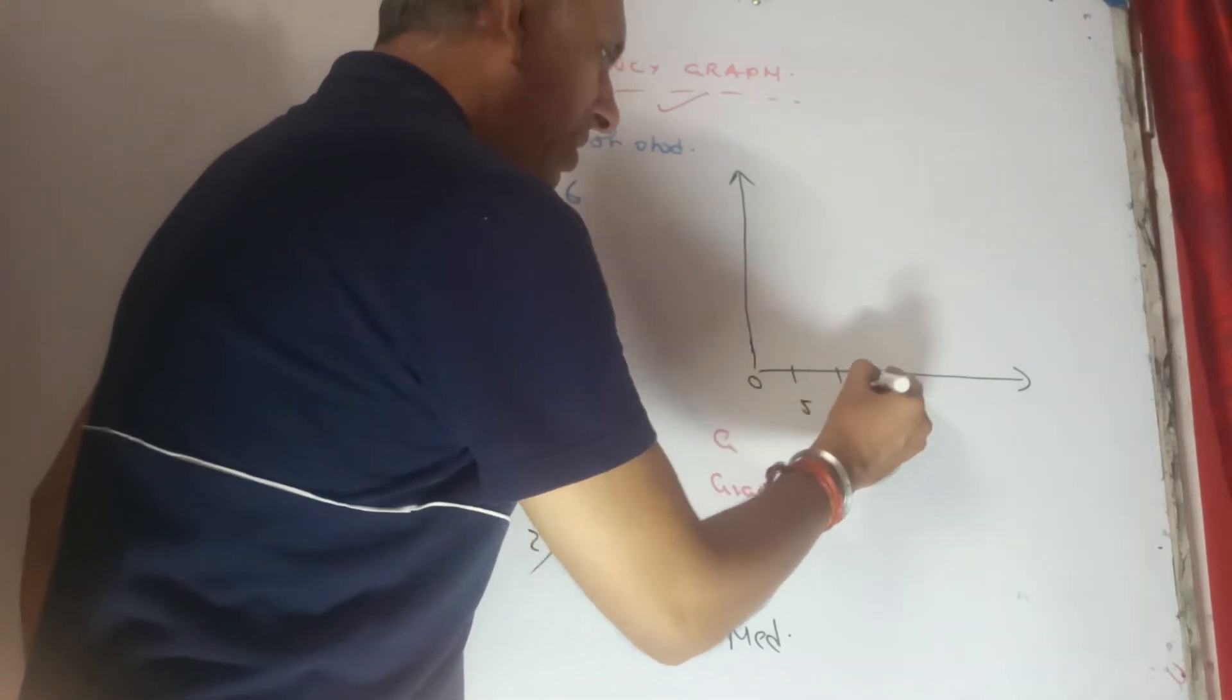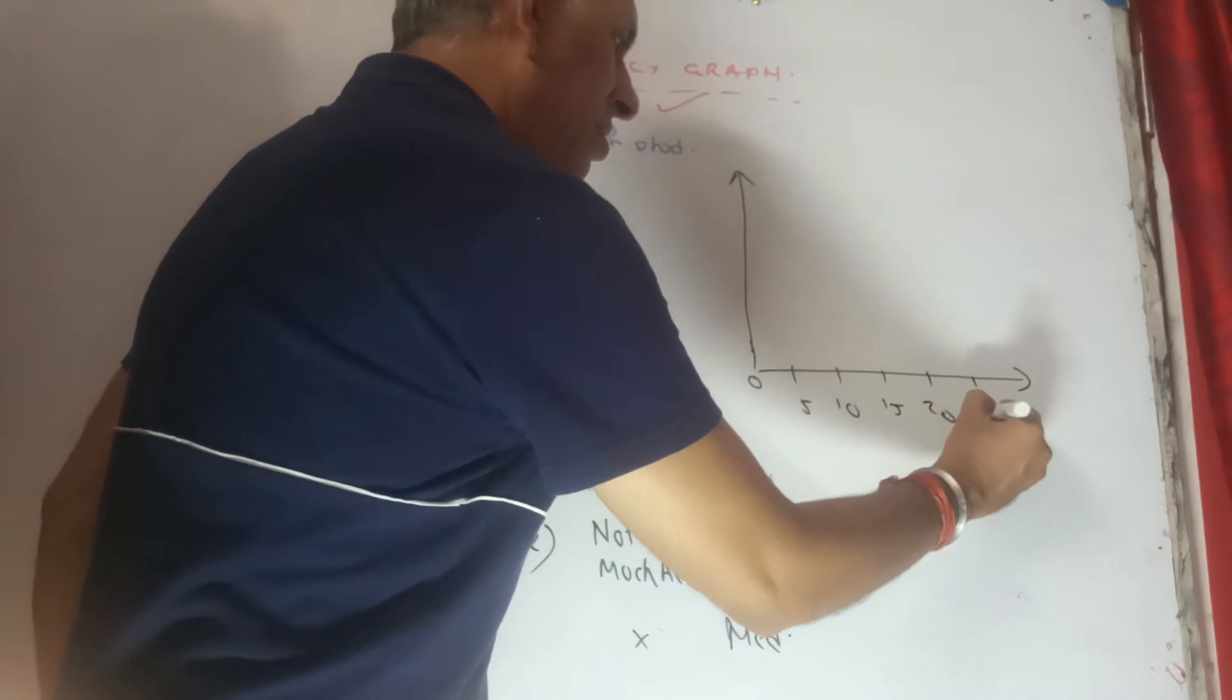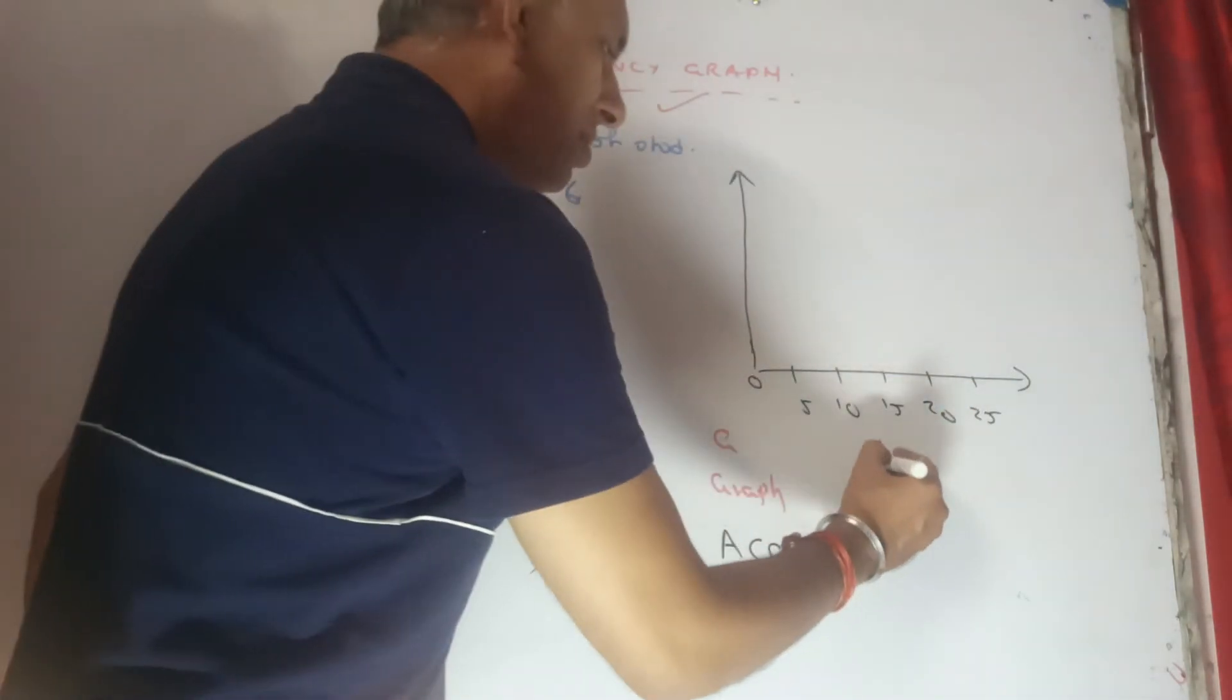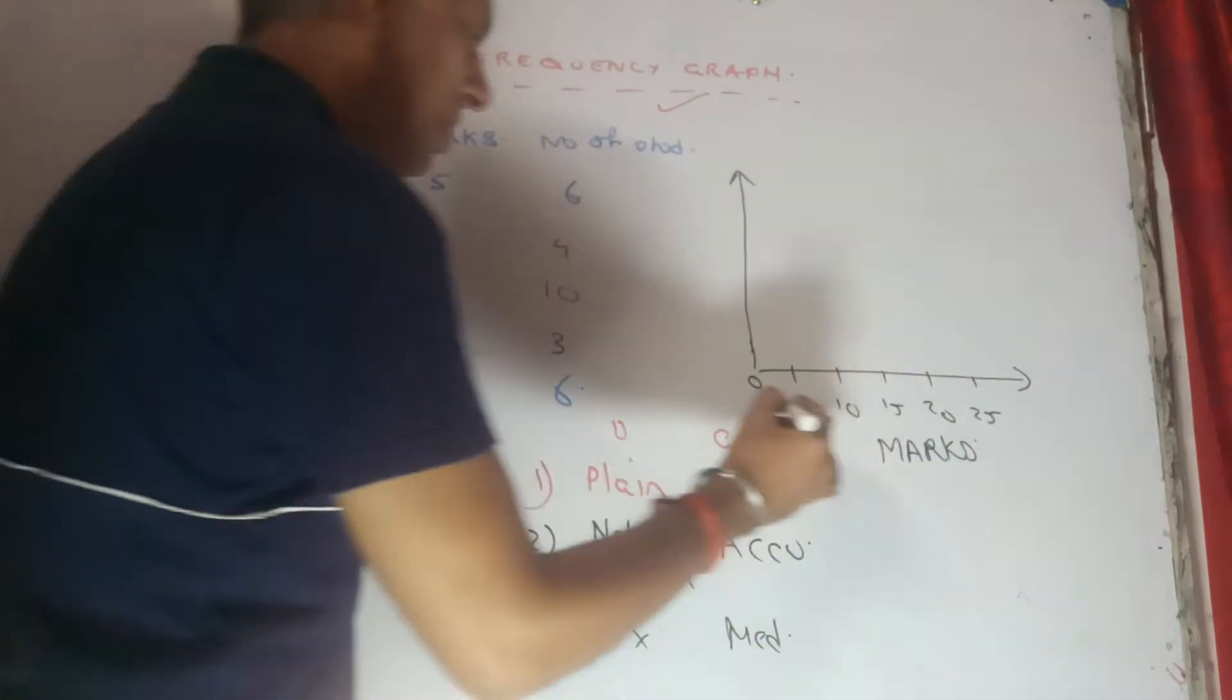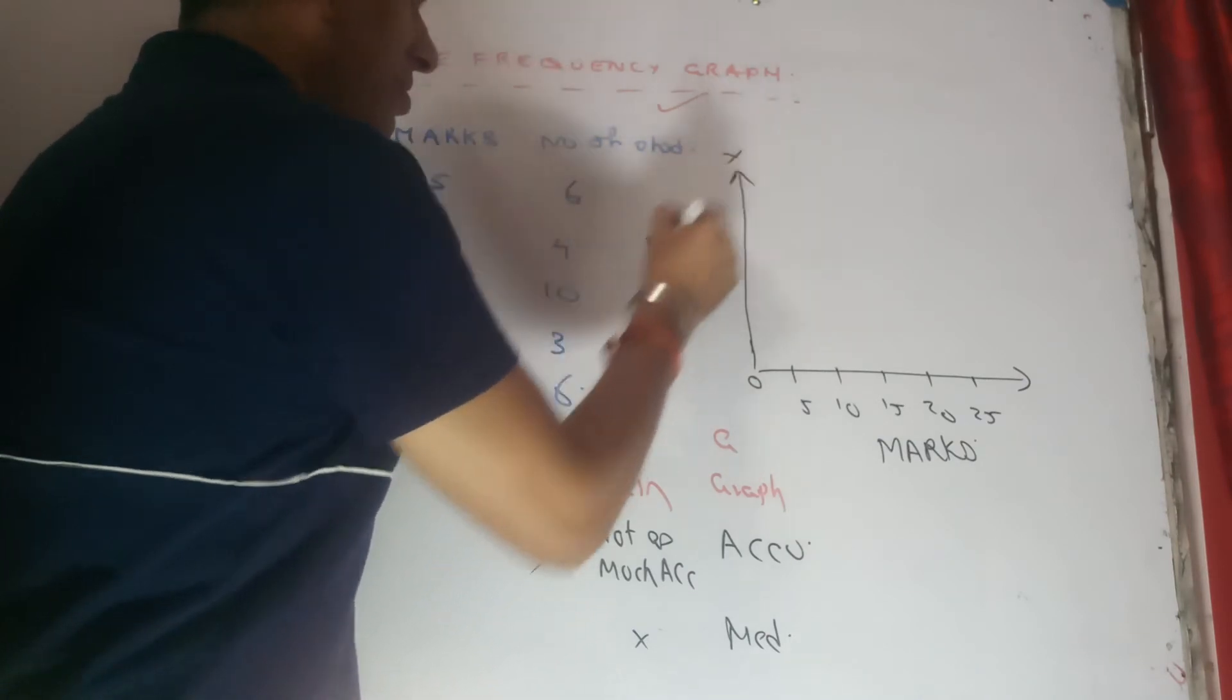5, 10, 15, 20, 25. Right, now these are the marks. On the other side you have the number of students on Y axis.